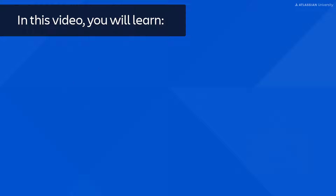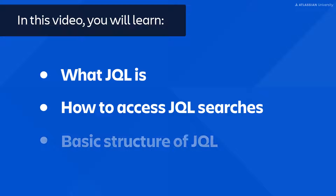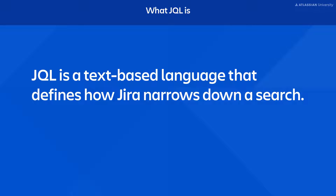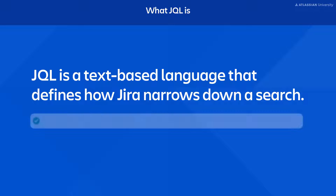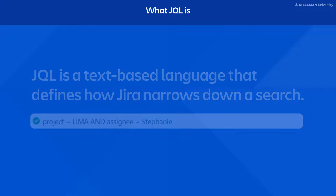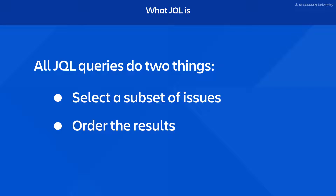In this video you will learn what JQL is, how to access JQL searches, and the basic structure of JQL. JQL is a text-based language that defines how Jira narrows down a search. It allows you to search for complicated criteria that can't be defined with a quick or basic search. All JQL queries do two things: they select a subset of issues and order the results. JQL queries support complex searches to help you find issue data across multiple fields in multiple projects.